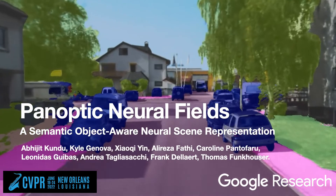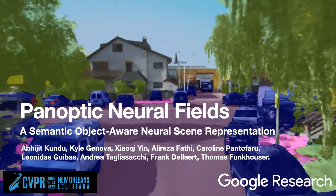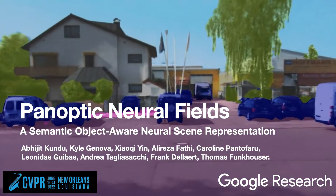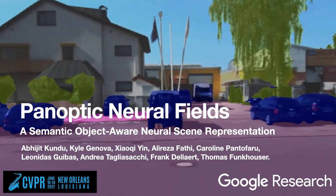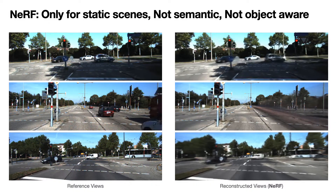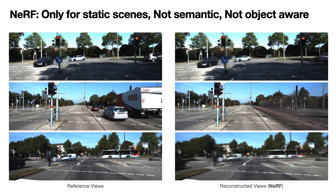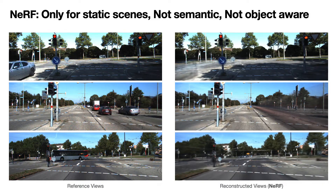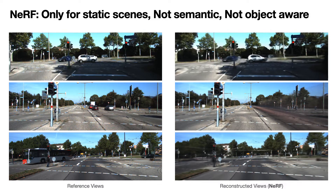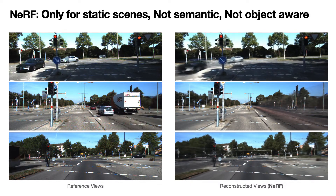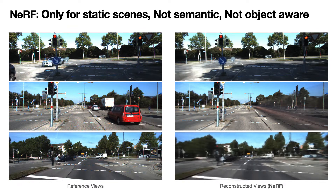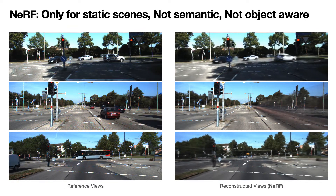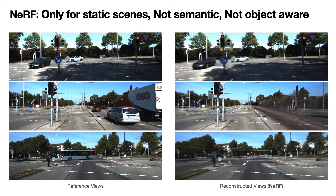We present Panoptic Neural Fields, a semantic and object-aware neural representation for dynamic 3D scenes. Recently, neural representations like NeRF have made remarkable progress in describing 3D scenes from videos. While NeRF is great, it can only represent static scenes. It lacks semantic understanding and is not object-aware.